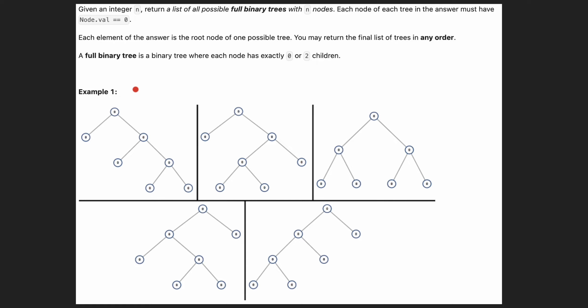Hi everyone, it's Sorkin. Today we have a problem where we are given an input number — for example, n equals seven — and we need to return all possible full binary trees with n nodes. The value of each node equals zero. We have five possible ways to construct full binary trees when n equals seven, and we can return them in any order.